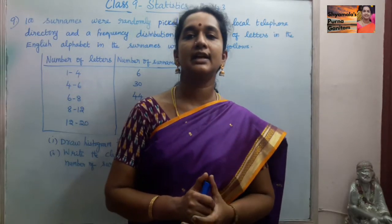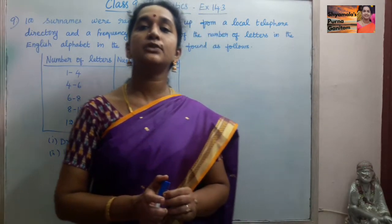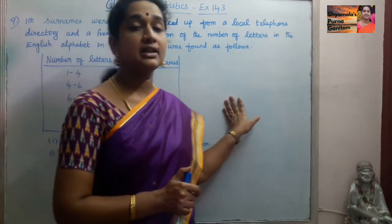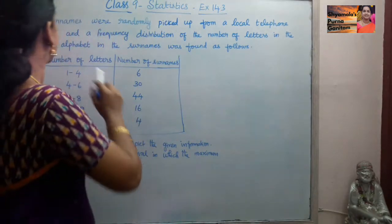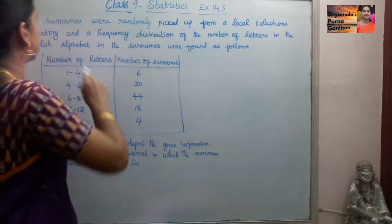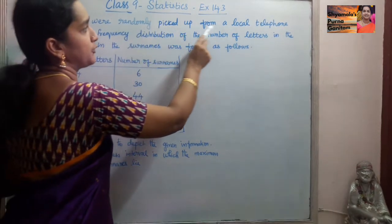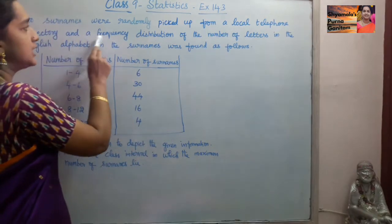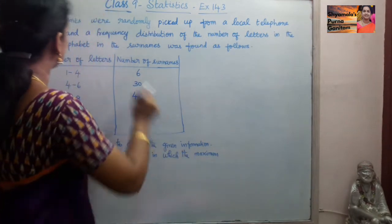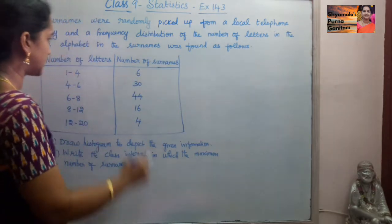Good morning students. In this class I will be doing Class 9, CBSE syllabus, 14th chapter Statistics, Exercise 14.3, 9th sum — this is the last sum in the exercise. 100 surnames were randomly picked up from a local telephone directory and the frequency distribution of the number of letters in the English alphabet in the surnames was found as follows.